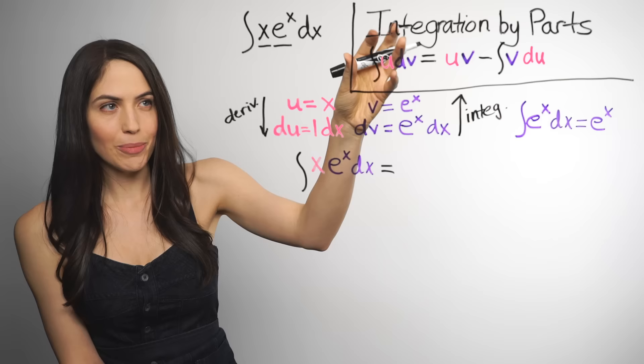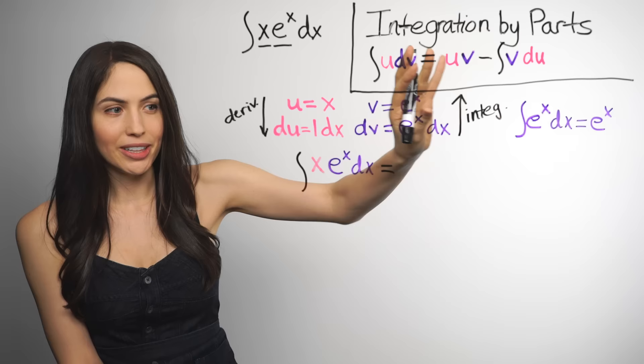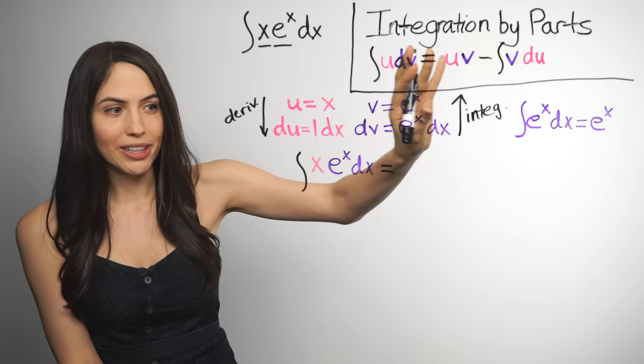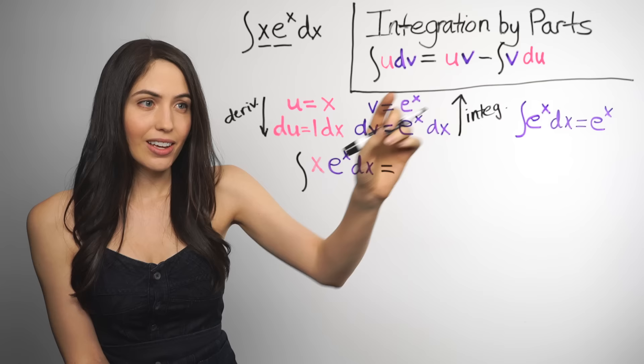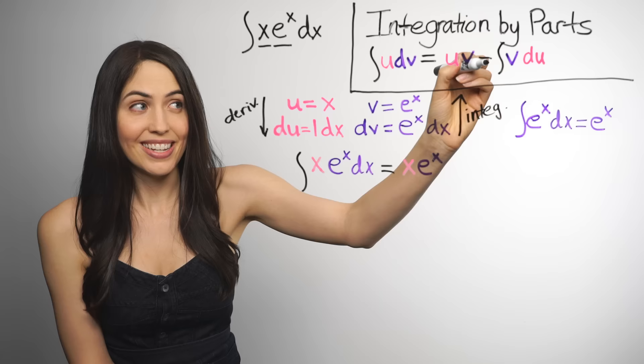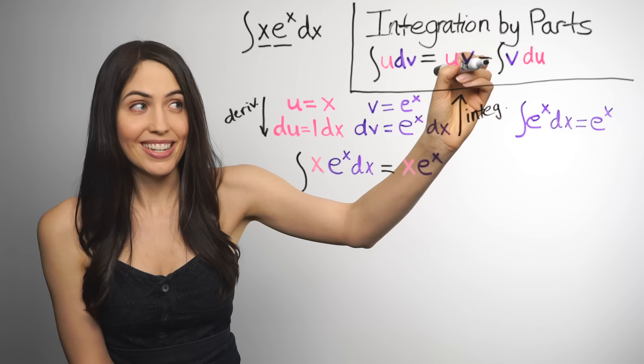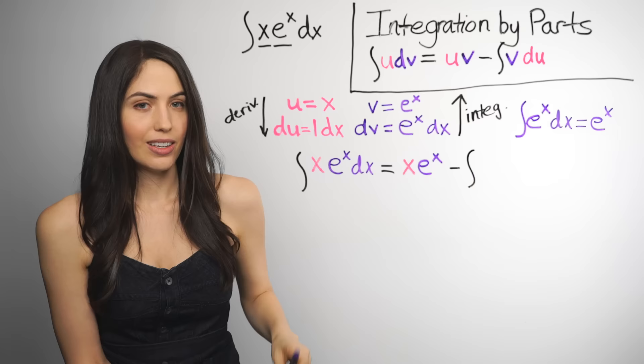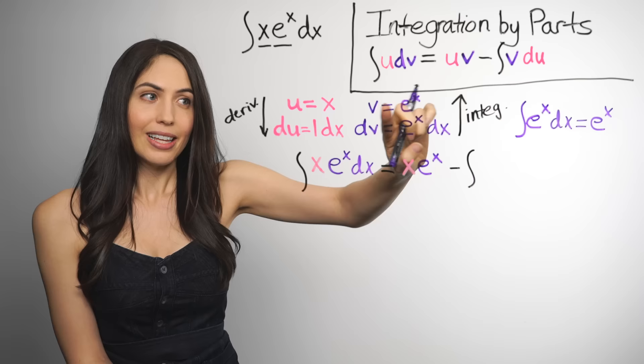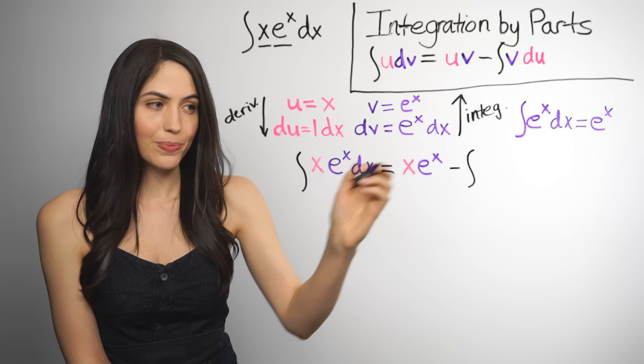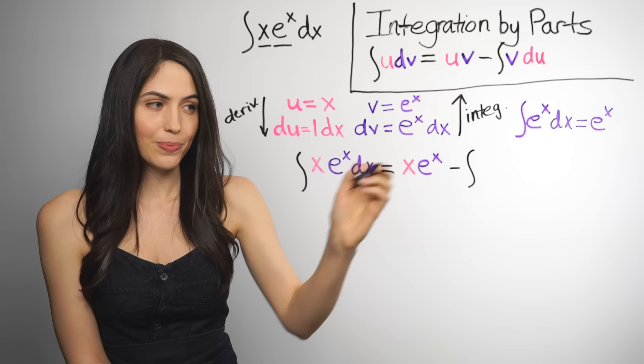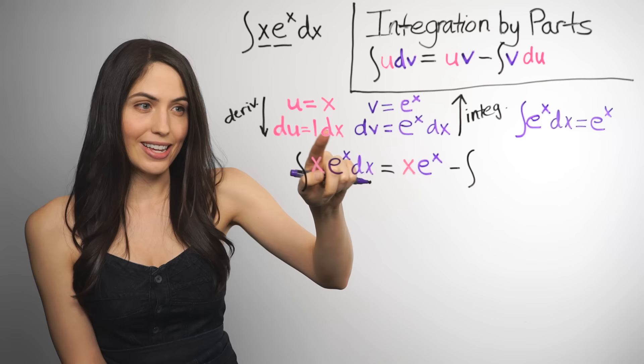Okay, so now we're going to use this formula on our integral, x e to the x dx. x is u, e to the x dx is dv. And the first part of the formula, what this becomes is first u times v, which for us is x times e to the x minus the integral of v times du. And we have those, v is e to the x, du is 1 dx. So this is going to be minus the integral of v du, which is e to the x, 1 dx. And we don't even need to write the 1. This is the same as dx, the 1 is kind of implied. So it's going to be minus the integral of e to the x dx.